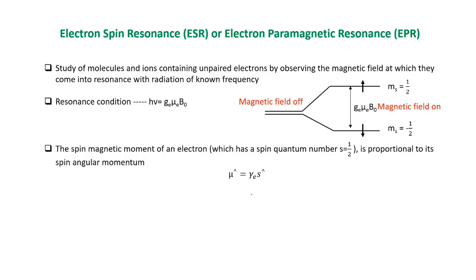what is electron spin resonance or electron paramagnetic resonance? ESR is the study of molecules and ions containing unpaired electrons by observing the magnetic field at which they come into resonance with radiation of known frequency. This term unpaired electron is very important in ESR or EPR because it is applicable only for molecules and ions containing unpaired electrons.